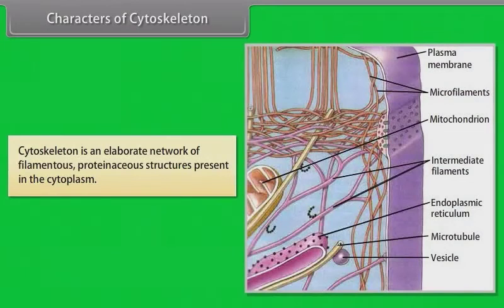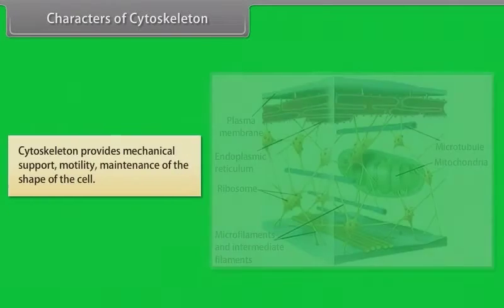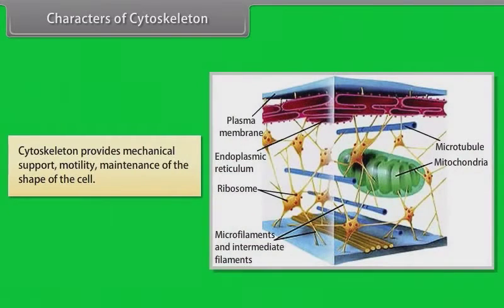Characters of cytoskeleton: Cytoskeleton is an elaborate network of filamentous, proteinaceous structures present in the cytoplasm. Cytoskeleton provides mechanical support, motility, and maintenance of the shape of the cell.